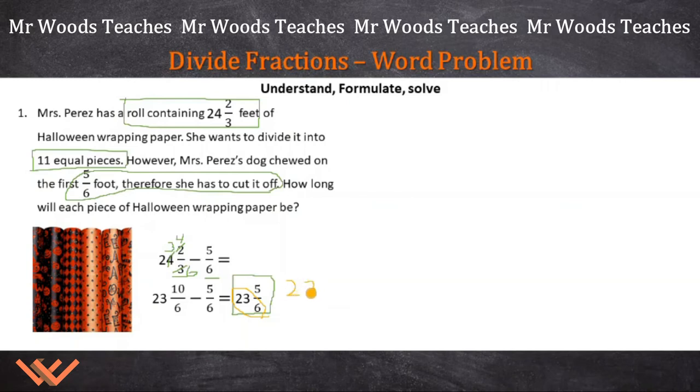23 times 6. 6 times 3 is 18. 6 times 2 is 12, plus 1 is 13. So 138. And then I need to add that 5, and that's going to give me 143. So here I made it simpler and easier to read. So I have 143/6 divided by 11.